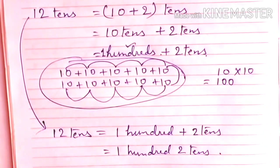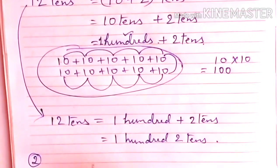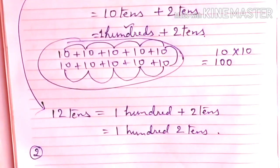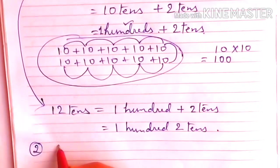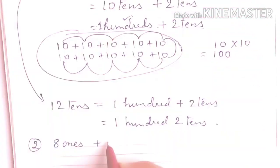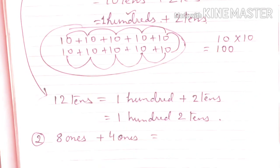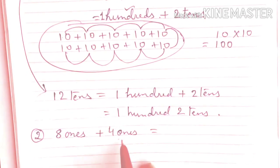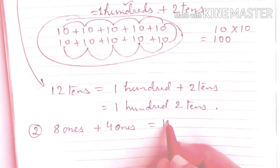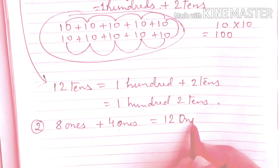In the same way, let's see another example. Example 2. In example 2, if we have 8 ones and 4 ones, how many ones do we have? 8 plus 4, 8 plus 4 is equals to 12. 12 ones.